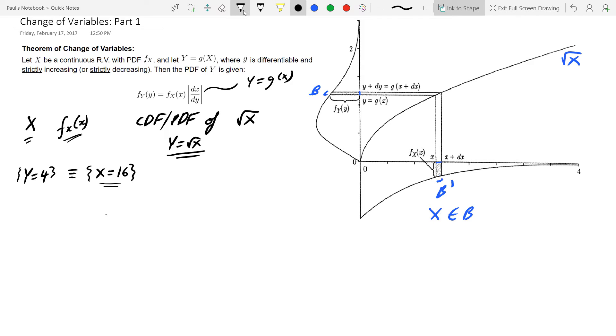Alright, and so now the thing that we're really interested in is what is the probability of Y equals 4. So if we get Y equals 4, that would mean that X equals 16, right? So from that we can say that the probability of Y equals 4 is equivalent to the probability of getting X equals 16.